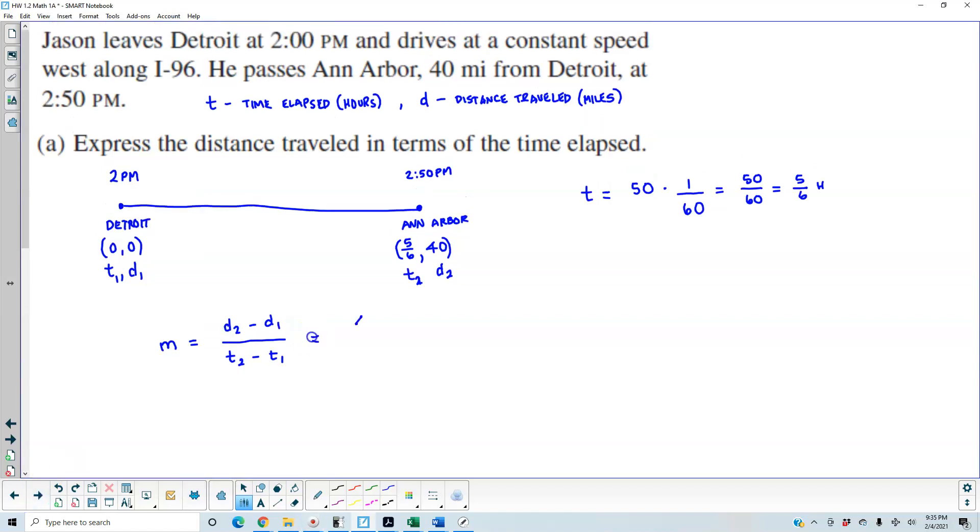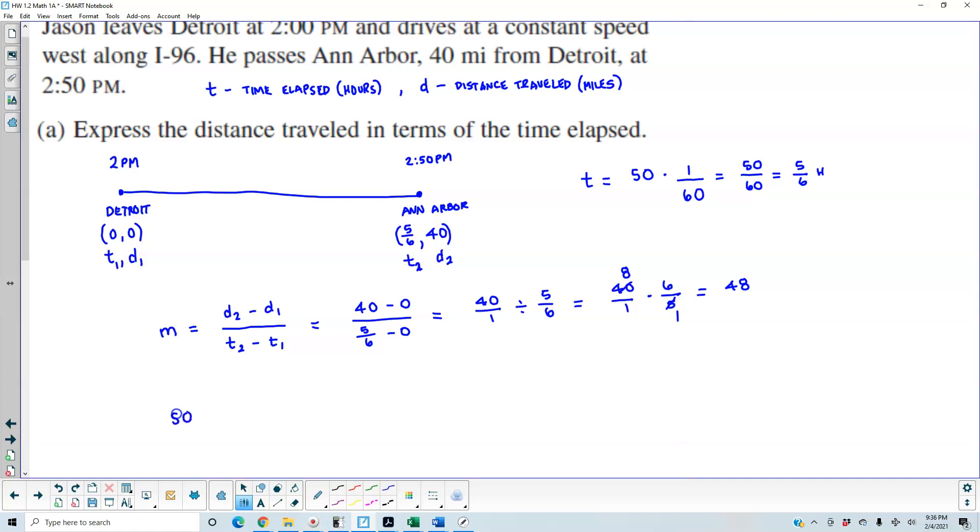We have 40 minus 0 divided by 5/6 minus 0. That means we have 40 over 1 divided by 5/6. So that means we got 40 over 1 times 6 over 5. That gives us 48.